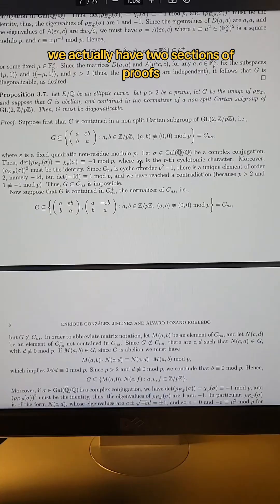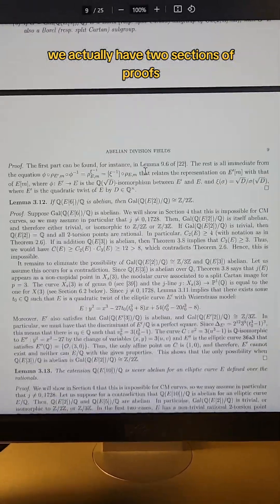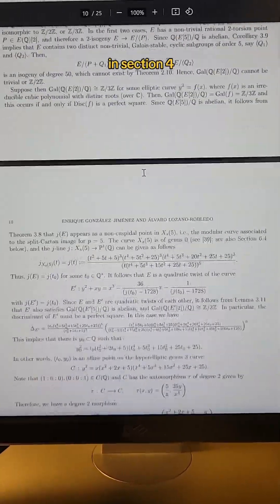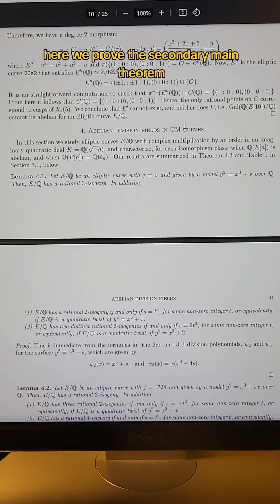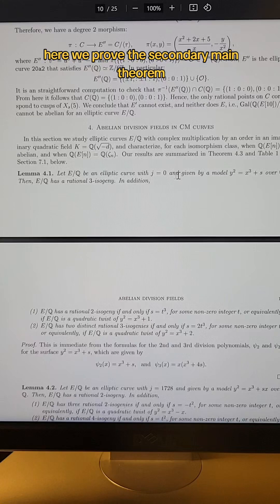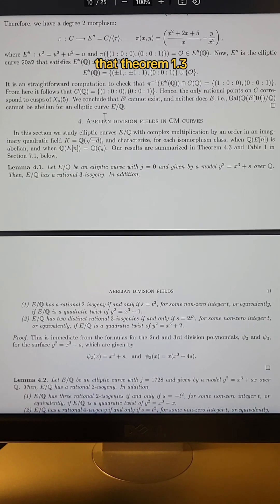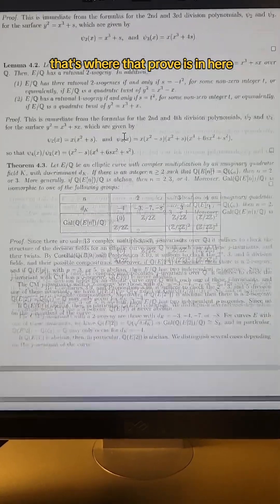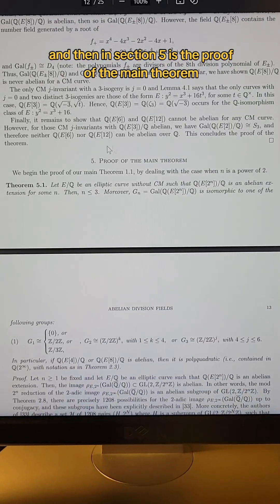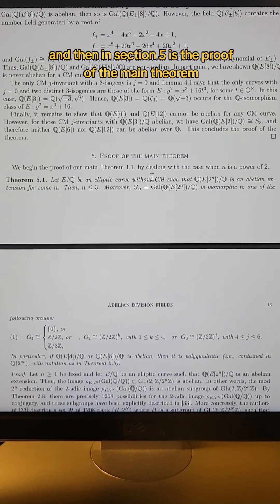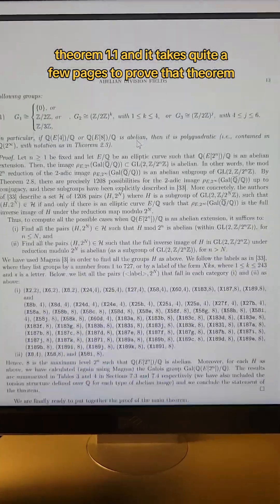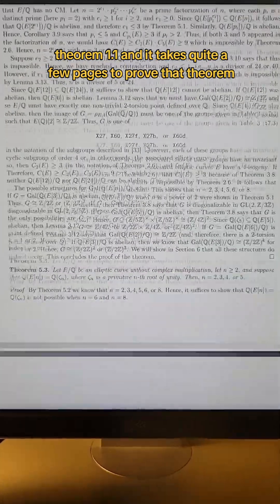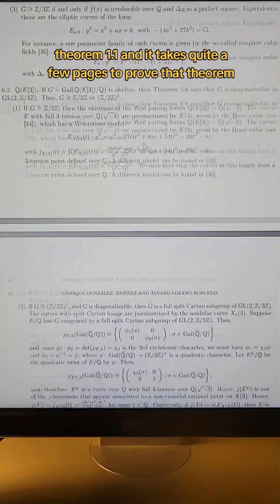And we actually have two sections of proofs. In section four, here, we prove the secondary main theorem, that theorem 1.3, I believe it was. That's where that proof is in here. And then in section five is the proof of the main theorem, theorem 1.1. And it takes quite a few pages to prove that theorem, but it is all in there.